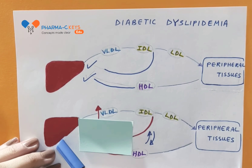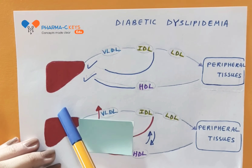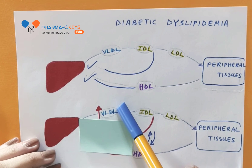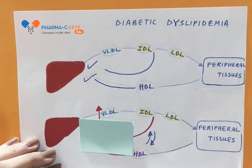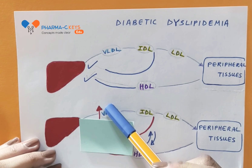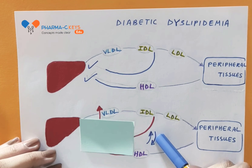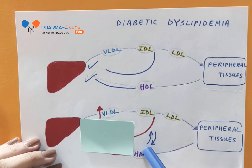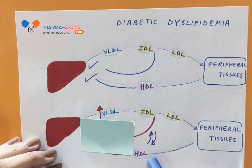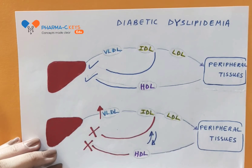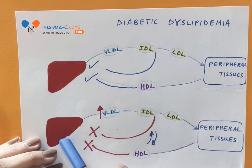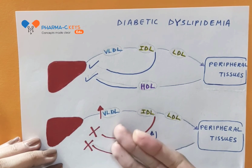So, what happens in diabetic dyslipidemia? In diabetes, excessive amounts of substrates lead to the overproduction of VLDL particles. Not just that — this overproduction leads to the alteration of the reverse cholesterol transport pathway, leading to the production of lipoproteins of altered composition. This leads to their poor interaction with the LDL receptors on the liver surface, leading to their decreased clearance.